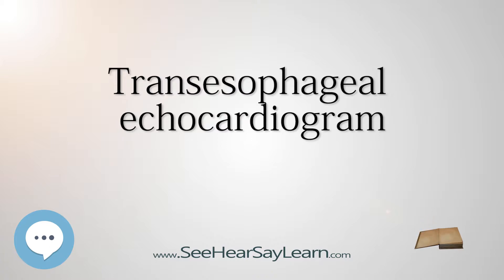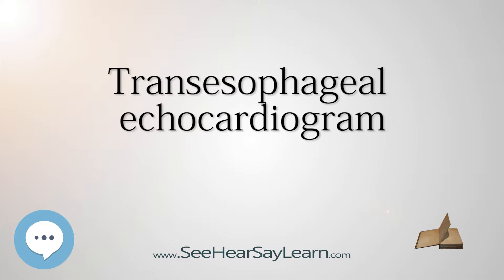Advantages: The advantage of TEE over TTE is usually clearer images, especially of structures that are difficult to view transthoracically through the chest wall. The explanation for this is that the heart rests directly upon the esophagus, leaving only millimeters that the ultrasound beam has to travel. This reduces the attenuation — weakening — of the ultrasound signal, generating a stronger return signal, ultimately enhancing image and Doppler quality.